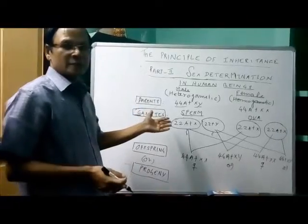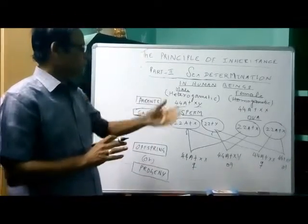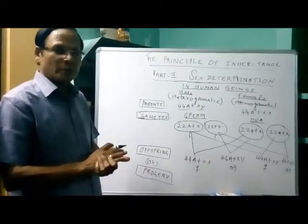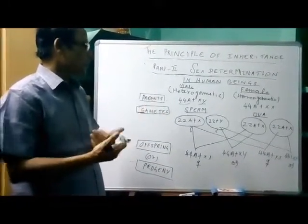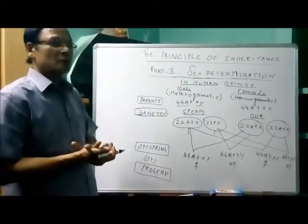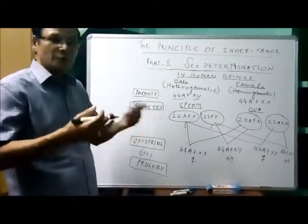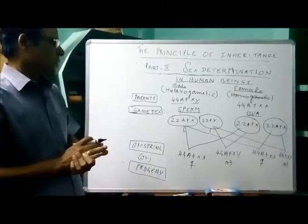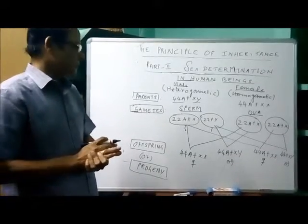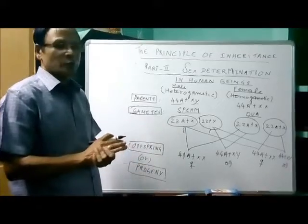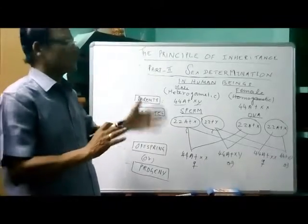So the sex is decided at the time of fertilization by the heterogametic sex — the sperm. The sperm with X chromosome fertilizing the egg results in a female, and the sperm with Y chromosome fertilizing the egg results in a male. The offspring may be 50% female and 50% male. In each pregnancy, there is always a 50% chance of having either a male or a female, because the sex is decided by the sperm.